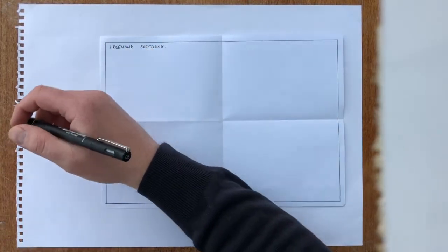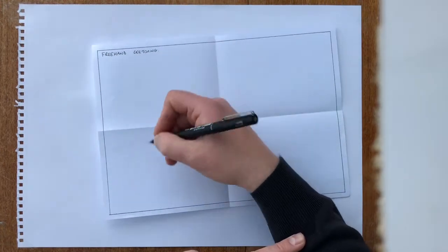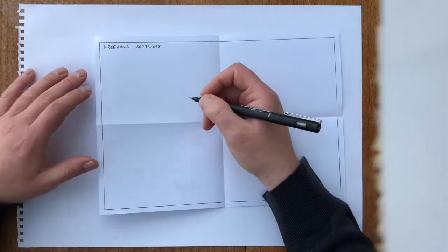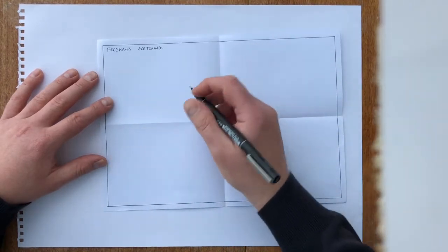If you have your elbow on the desk, what happens is it turns into a big compass. Likewise, if you flick your wrist, it's really good for doing curves, but not so good for doing straight lines. So you want to move your arm as best as you can.